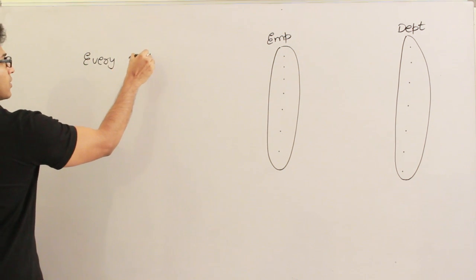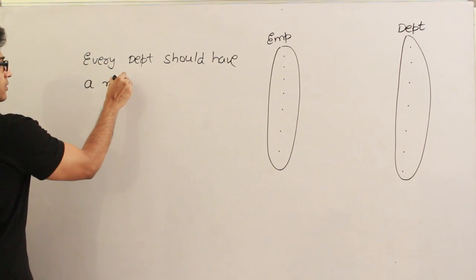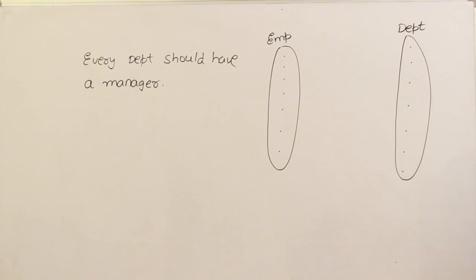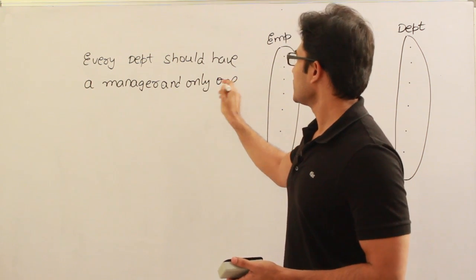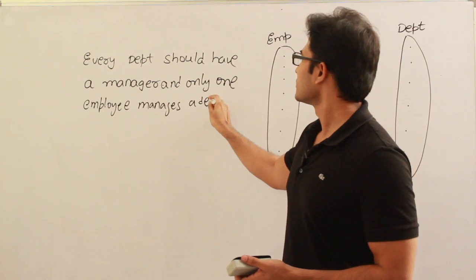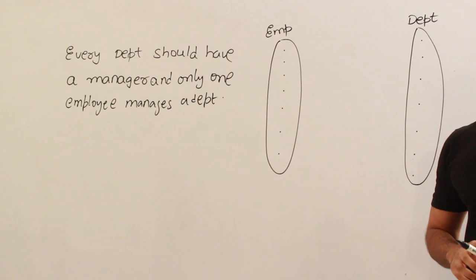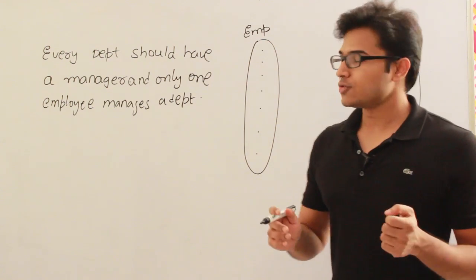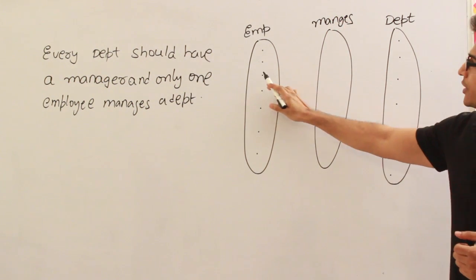Every department should have a manager, and only one manager should be there. Only one employee manages a department. For every department, one of the employees is going to act as a manager. The word 'manages' — the verb — tells us there has to be a relationship. So we are going to create a relationship and the name of the relationship is 'manages'. Employee manages department.